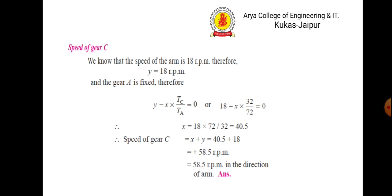We need to find the speed of gear c. The speed of the arm is 18 rpm anti-clockwise, so from the table y = 18. Since gear a is fixed, the speed of gear a from the table is y − x × (t_c / t_a) = 0. Solving this gives us the values of x and y. The speed of gear c from the table is x + y, which gives 58.5 rpm in the anti-clockwise direction.